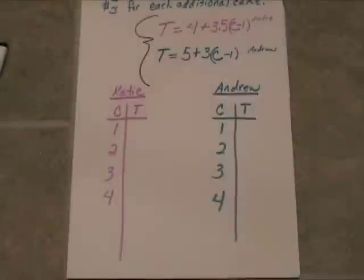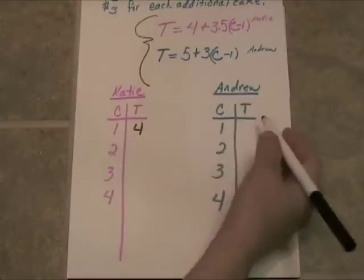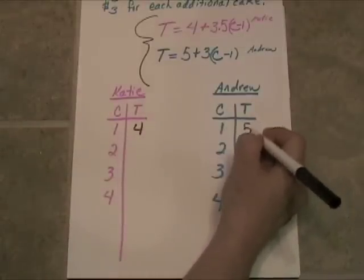Now, we're going to do a little table comparison here, and we'll see, is there ever a point where they're both making exactly the same money? Alright, so if Katie sells one cake, her total income is going to be $4, and if Andrew sells one cake, his total income is going to be $5.